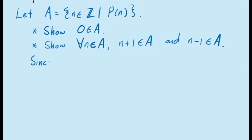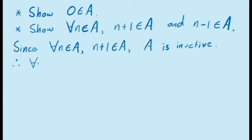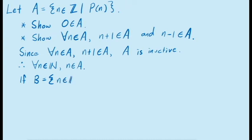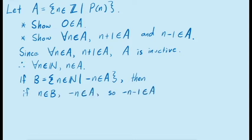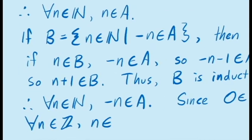The reason for this is that since for any value of n in A we have n plus 1 in A, A is an inductive set, which means it contains all of the natural numbers. But also, if we consider the set of all values of n for which negative n is in A, the fact that whenever n is in A, n minus 1 is in A proves that this is also an inductive set. So not only are all the natural numbers in the set A, but all their negatives are as well, and given that 0 is also in the set A, we've covered the entire set of integers.